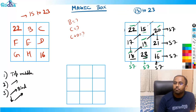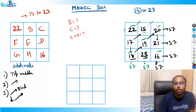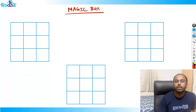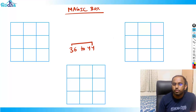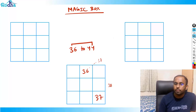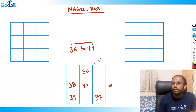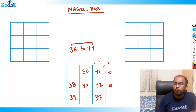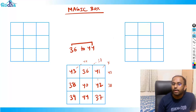Now let's fill one more magic box for 36 to 44. Start with 36 at the top middle. 37 is outside — come down. 38 is outside — come to the other end. Diagonally up is blocked — move down, fill 39. Then 40, then 41. Blocked again — move down, fill 42. Diagonally up: 43 is outside — come back. 44 is outside — fill at the other end. Now check: every row, column, and diagonal sums to 120.